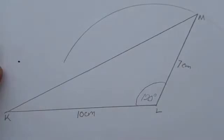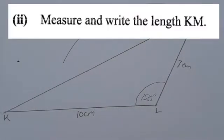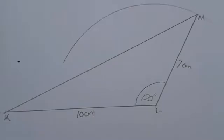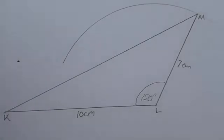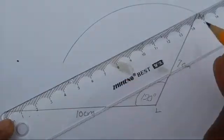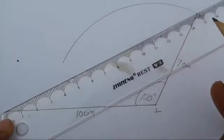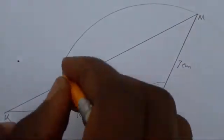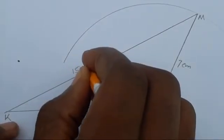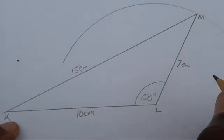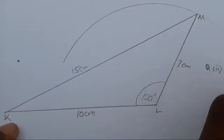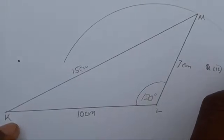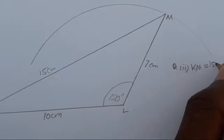The next question says: measure and write the length KM. Get your ruler and take the measurement from zero. KM measures 15 centimeters, so you write: KM = 15 centimeters.